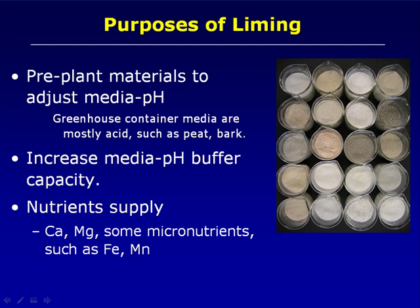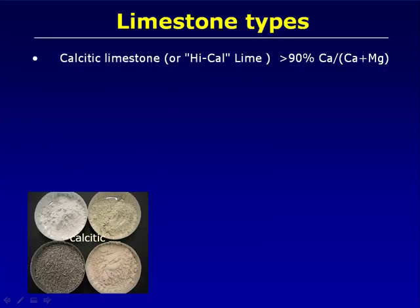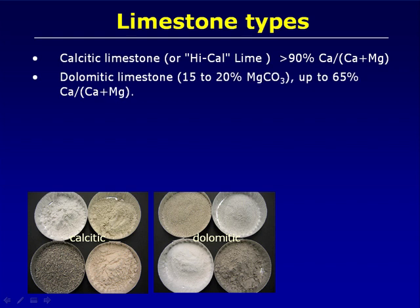A highly reactive lime is most useful for adjusting initial pH, and a less reactive lime may be useful for providing longer term pH buffering. There are several limestone types. Limestones that are high in calcium are termed calcitic limestones, and limestones that also contain a significant amount of magnesium are termed dolomitic limestones.